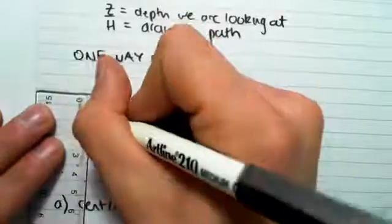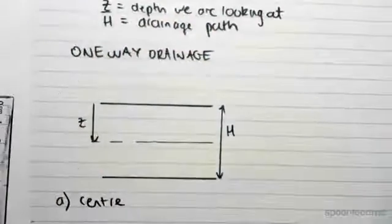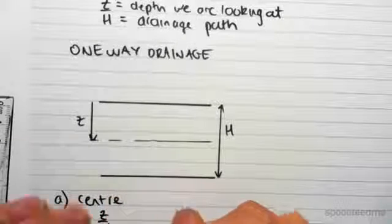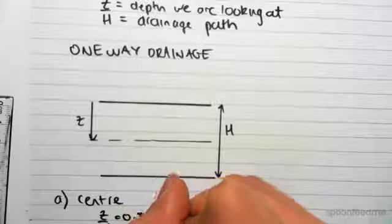And we're looking at the centre, so we're going to a point Z from the surface. You can see just graphically that Z on H would be a half, right? Z is a half of H, so Z on H would be a half.